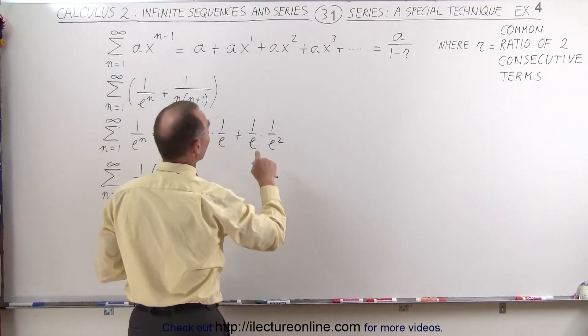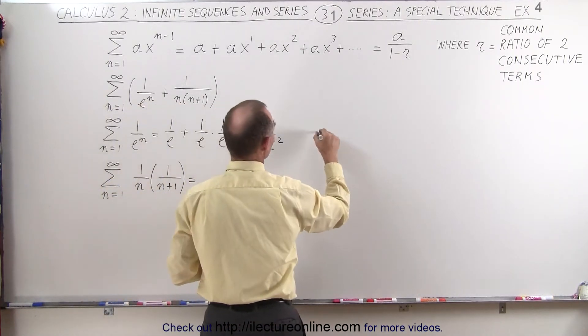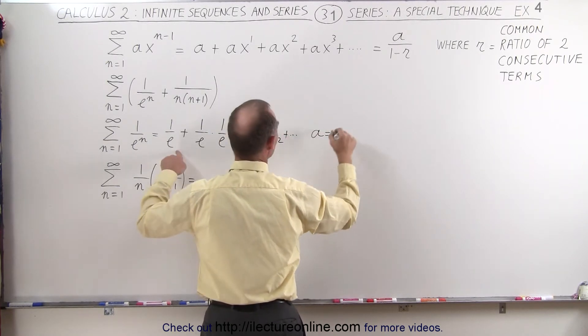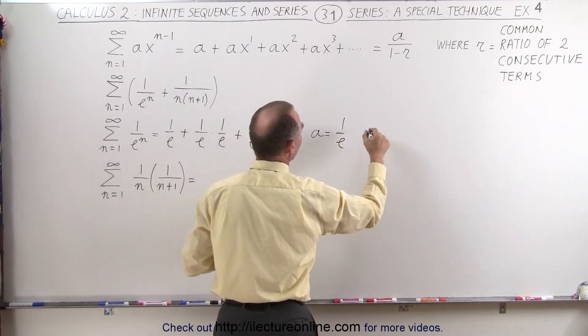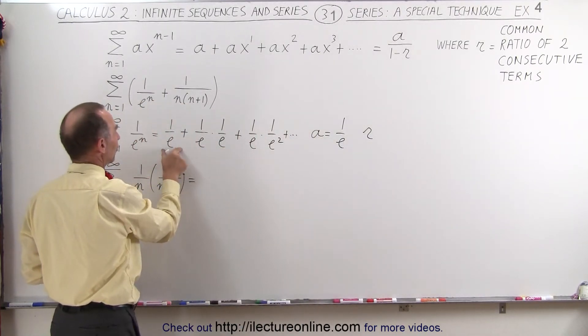So we can then calculate a. In this case, a will be equal to 1 over e. And the common ratio will be the ratio of one term divided by the previous term, so 1 over e squared divided by 1 over e.